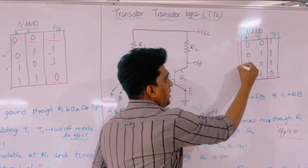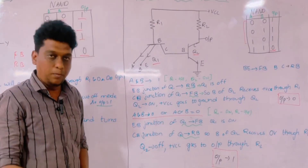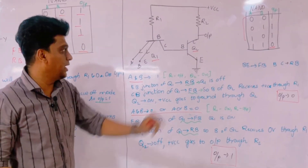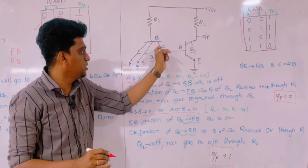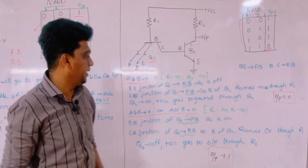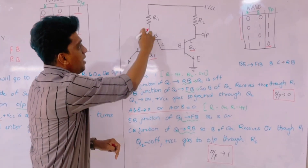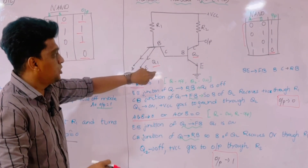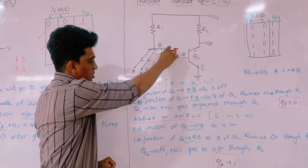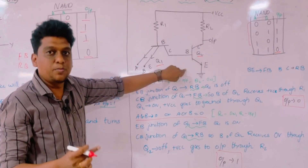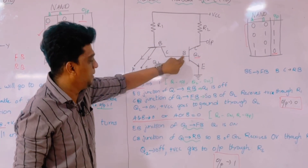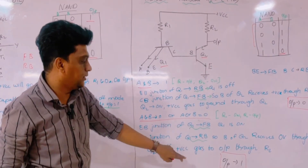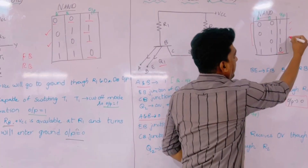For the remaining three conditions — 0,0 and 0,1 and 1,0 — the emitter-base junction of Q1 becomes forward biased and the collector-base junction becomes reverse biased. Q1 turns on, and with the collector-base junction of Q1 in reverse bias, Q2's base receives supply from VCC which turns Q2 off. So for all these three conditions the output is 1.